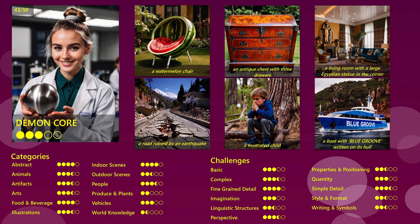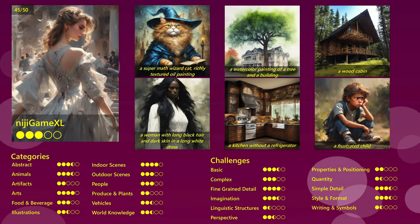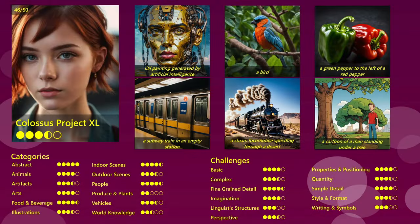Same is true for the Daemon Core model. Nothing outstanding, but a good and reliable quality over most categories and challenges, so this model goes into the C tier. Next comes Kopec's Avatar Qt, and I must confess that I couldn't get anything meaningful out of it. I tried it with different sampling methods, different scales, with and without VAEs, but nothing worked really well. So I'm putting it into E tier. Then comes Niji Game XL, which performed quite average or even below average, although some images were quite interesting and rather detailed. It's not a bad model, but also not really a good one, so it goes into D. Then there is the Colossus Project XL, and that one was quite impressive. It worked outstandingly well with abstract scenes, food and beverage, indoor scenes, and prompts with fine-grained details. Definitely an A.